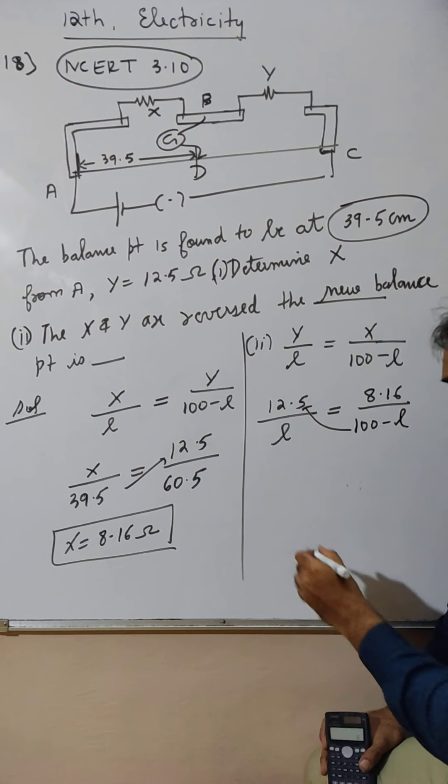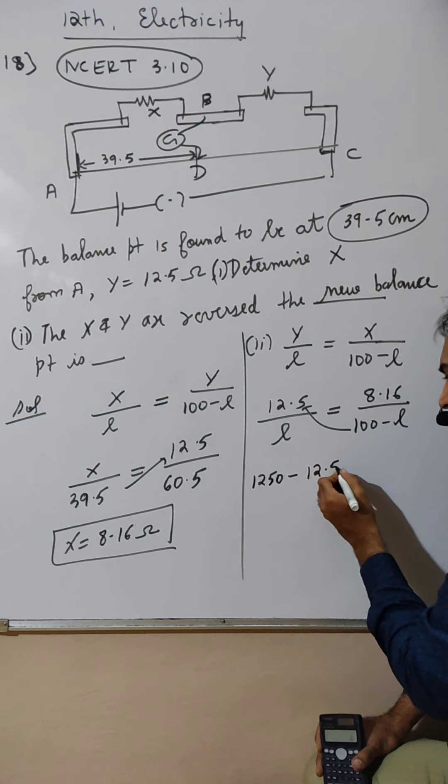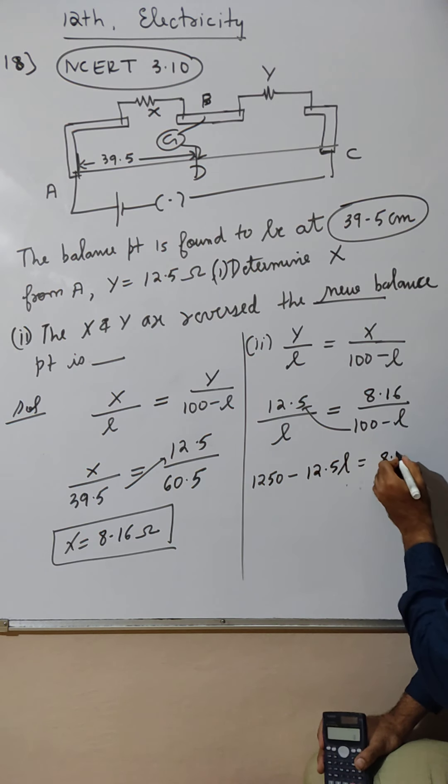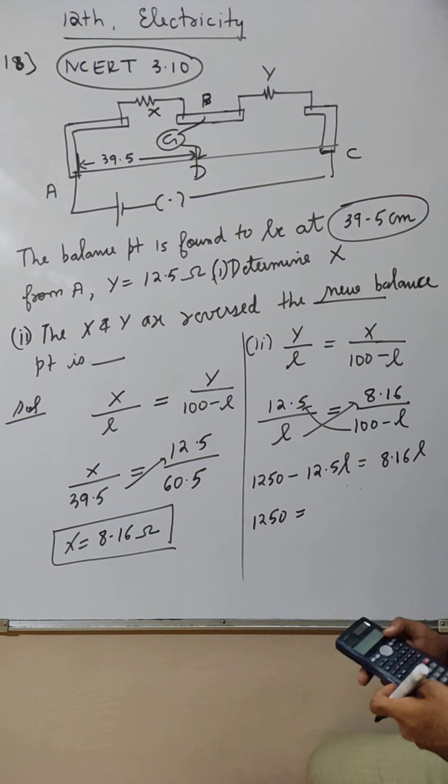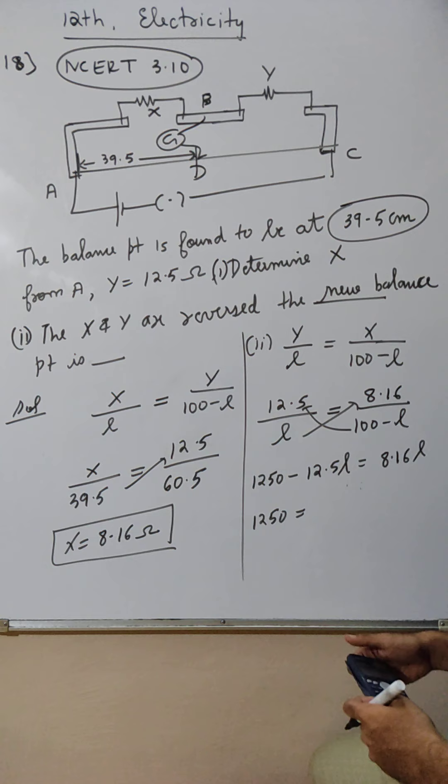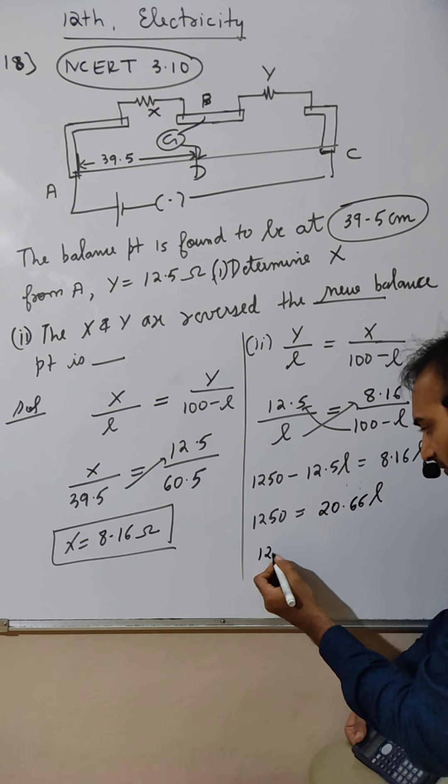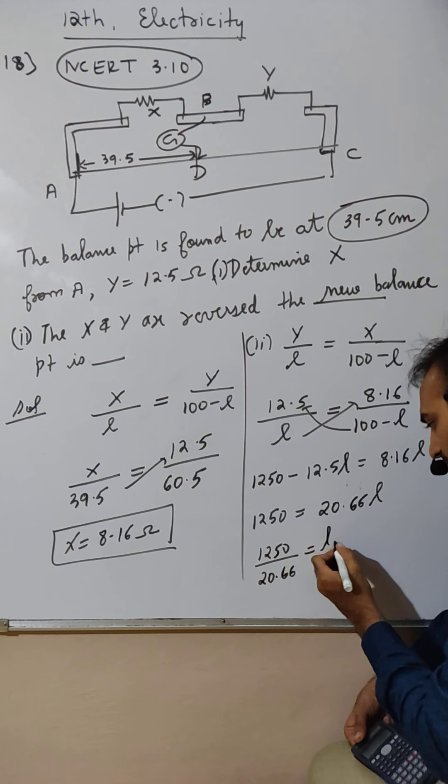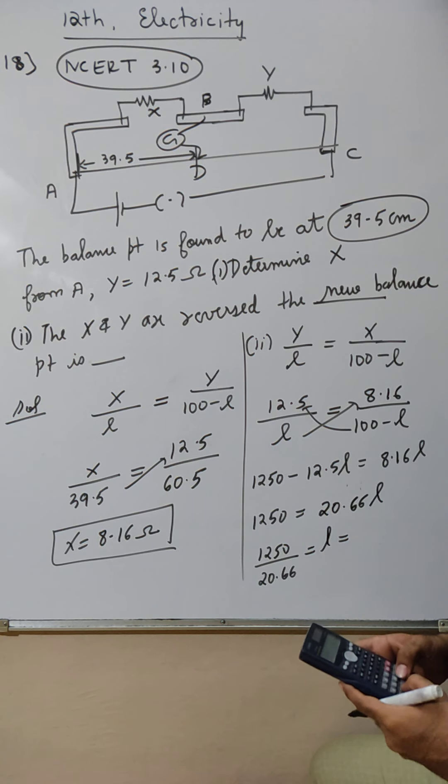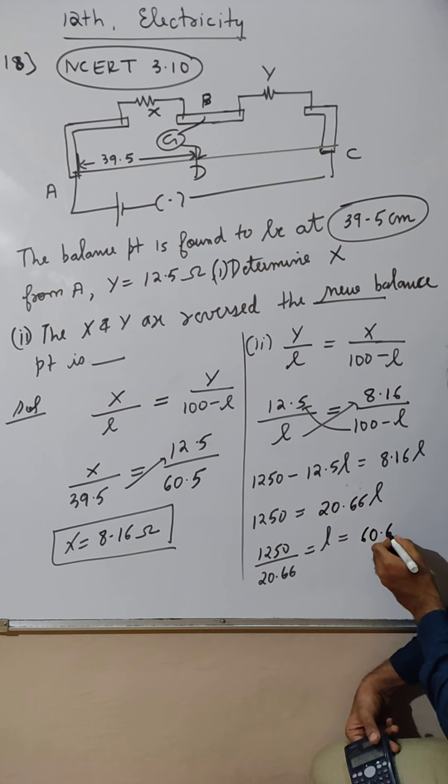This will go here. 1250 minus 12.5L equals 8.16L. This goes here. 1250 equals 20.66L. So 1250 divided by 20.66 equals L, which gives 60.6 cm.